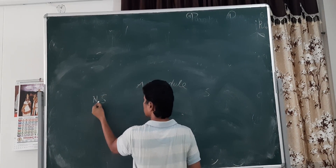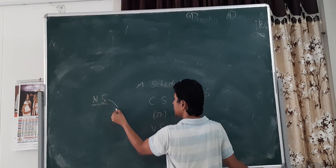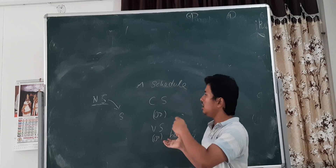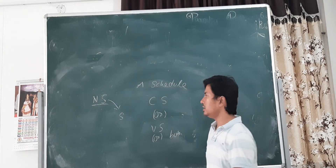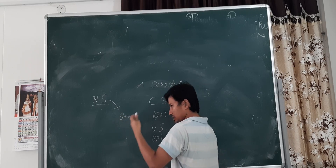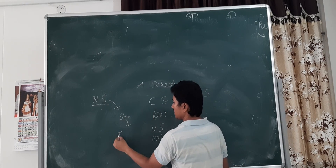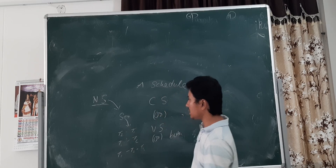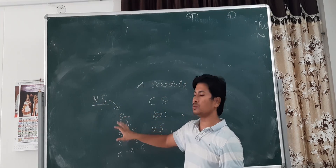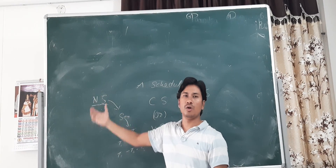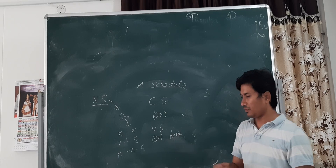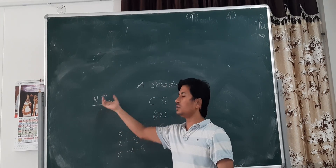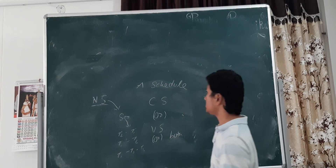If we have a non-serial schedule and it is conflict serializable or view serializable or both, then it is a serializable schedule. If a non-serial schedule is serializable — meaning it is equivalent to some serial order like T1 then T2, or T2 then T1 — then we can say that non-serial schedule is also consistent in output and safe to execute.